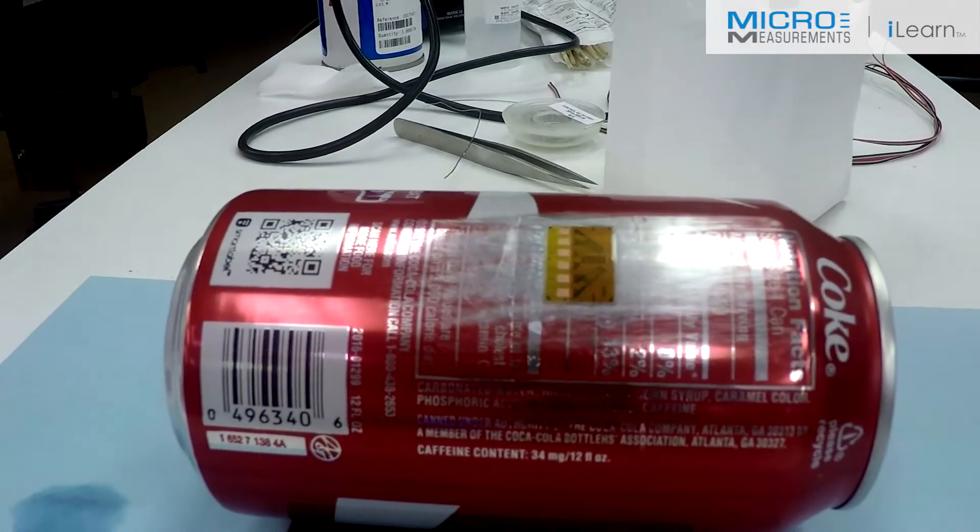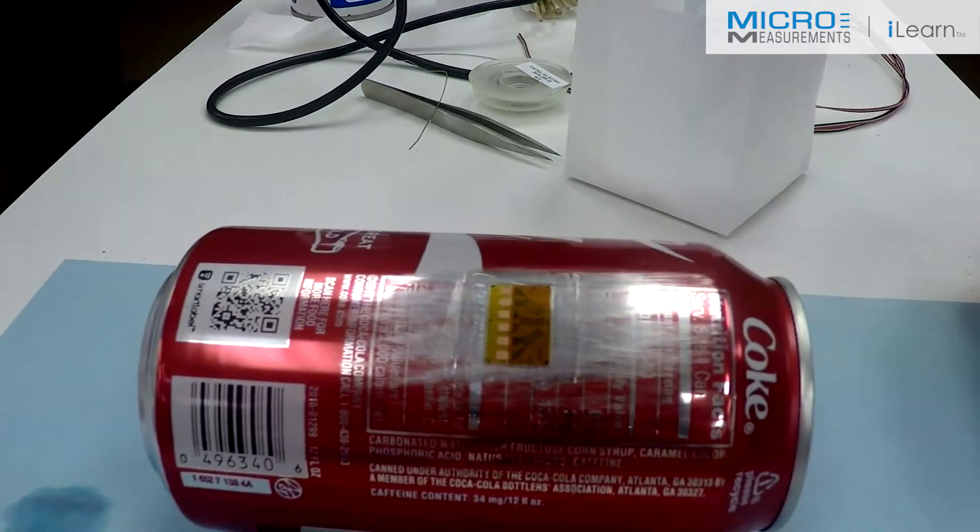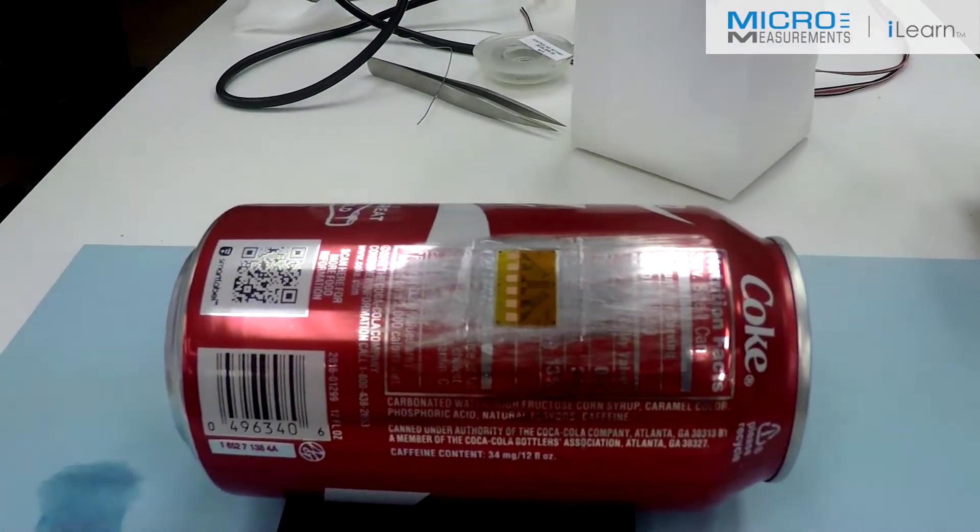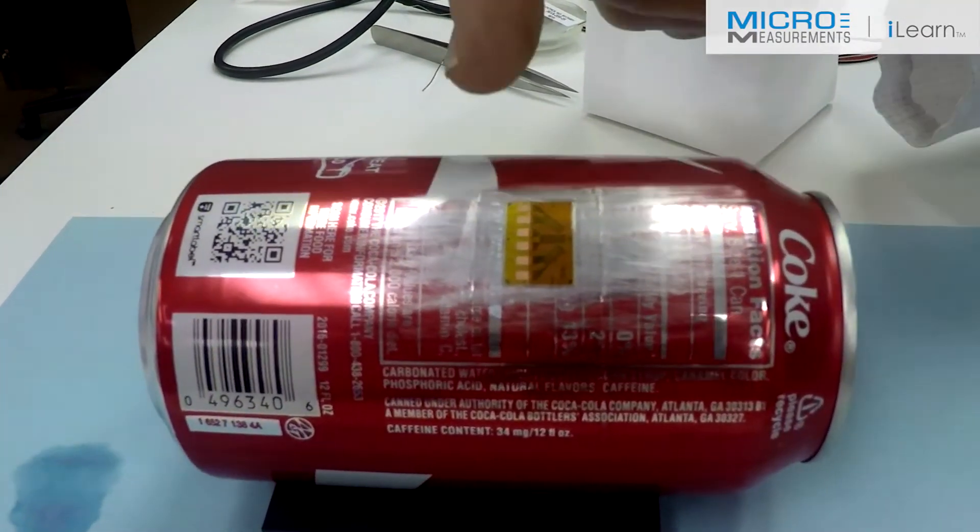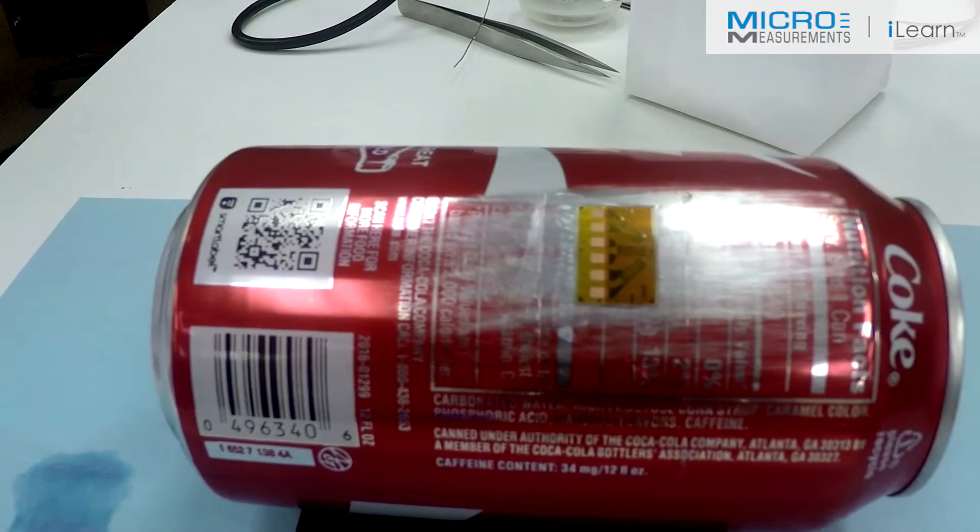A quick visual inspection. Looks like the gauge is well bonded. There's no lumps, bumps, or perturbations of the field. It looks pretty even. The adhesive system has a fillet around the edge, so that looks pretty good.